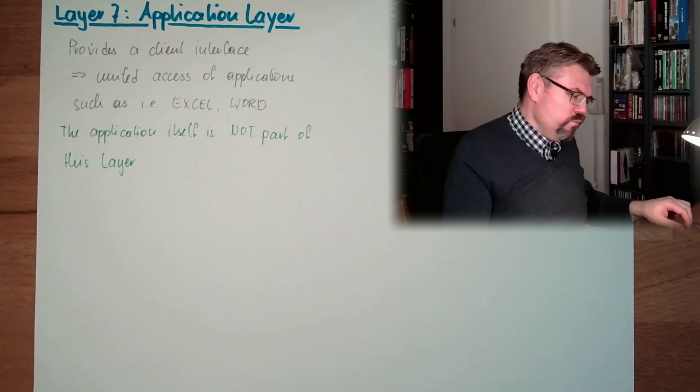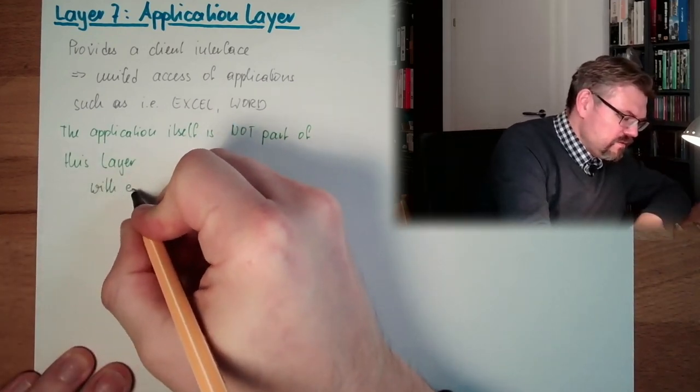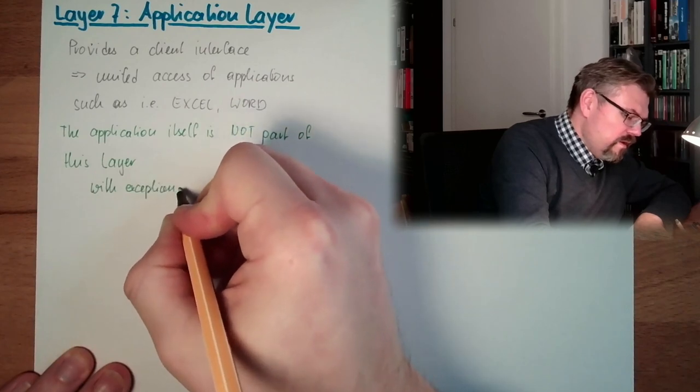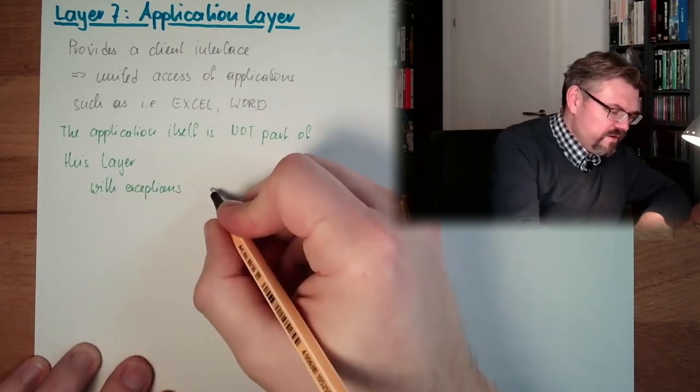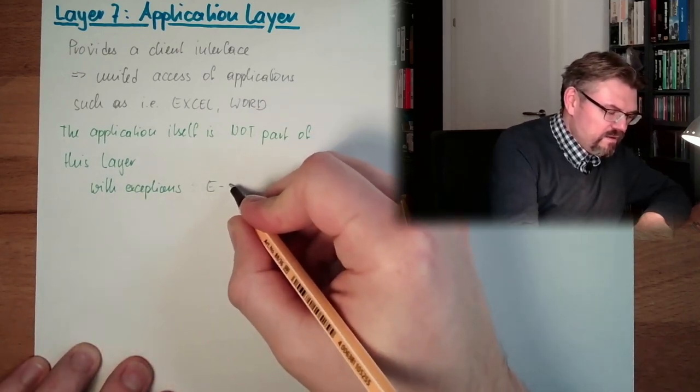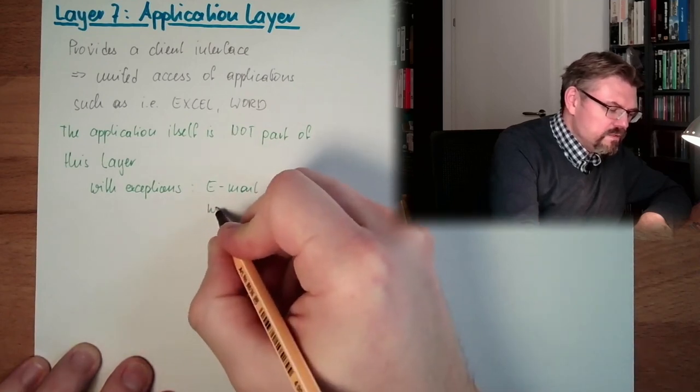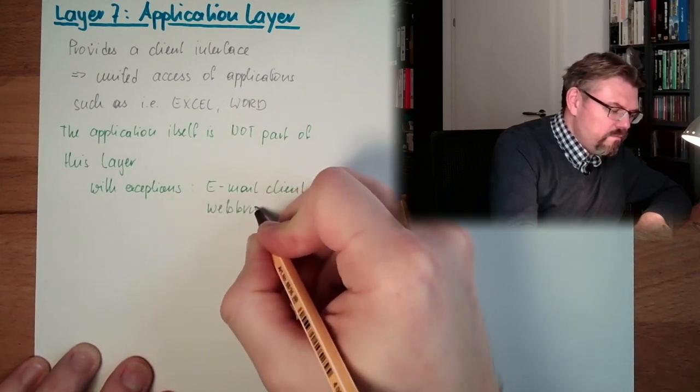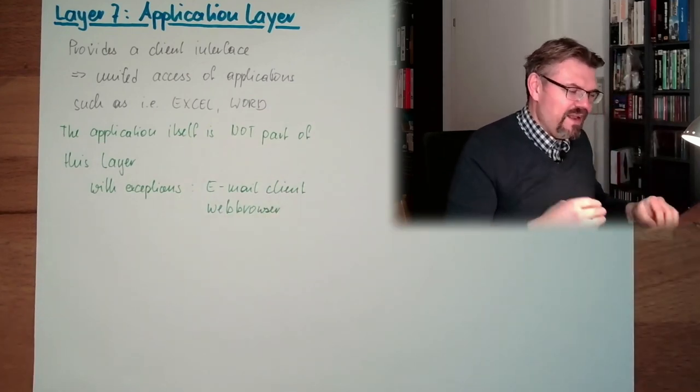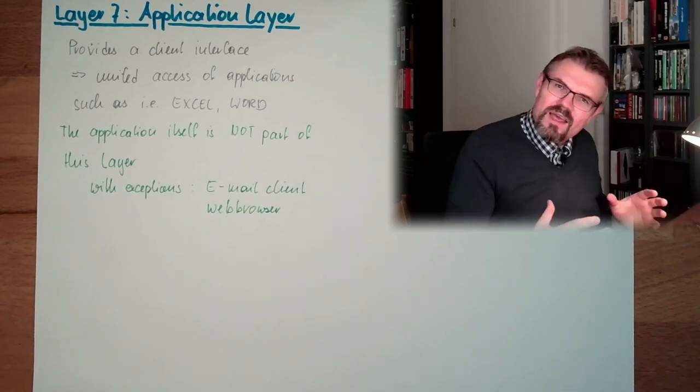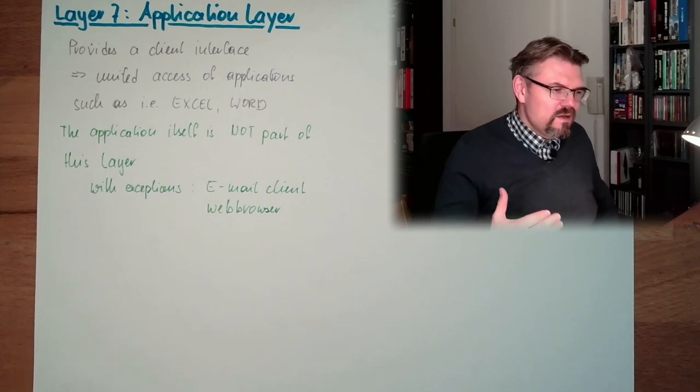With exceptions. These are the applications which are purely designed for communicating. This is, for instance, email client or web browser. Those can be considered as layer 7. They are incorporated in layer 7. Other things are just using it.